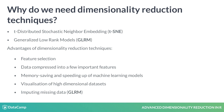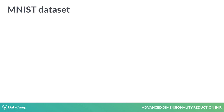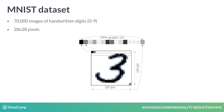Before we start reducing data dimensionality, let's have a look at the MNIST dataset. The MNIST dataset is a very well-known dataset used to evaluate the performance of machine learning models. It consists of 70,000 images of handwritten digits ranging from 0 to 9. Each image is 28 pixels in height and 28 pixels in width, which makes a total of 784 pixels.